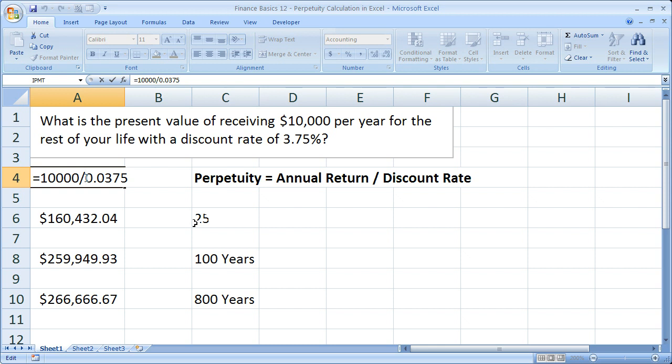However, if worst case comes to worst, and you somehow forget how to calculate the perpetuity, all you have to do is simply calculate the present value of this. So use the present value function. But put it way far out in the future.